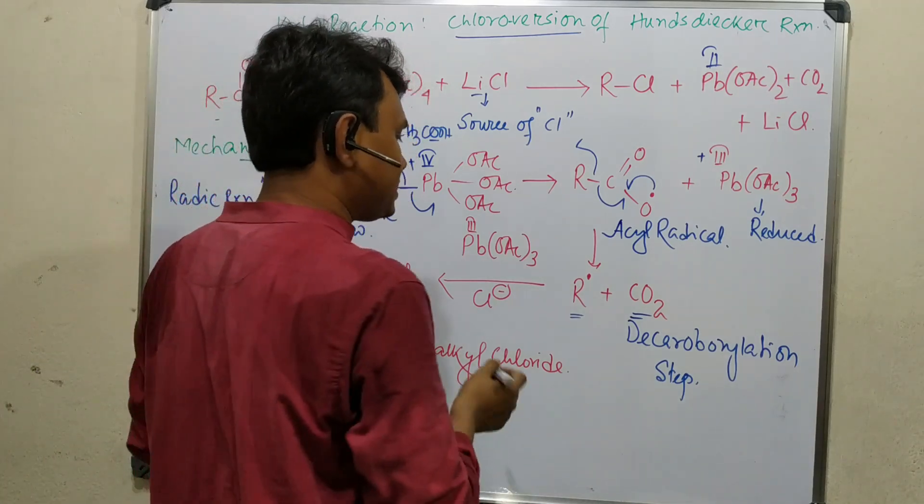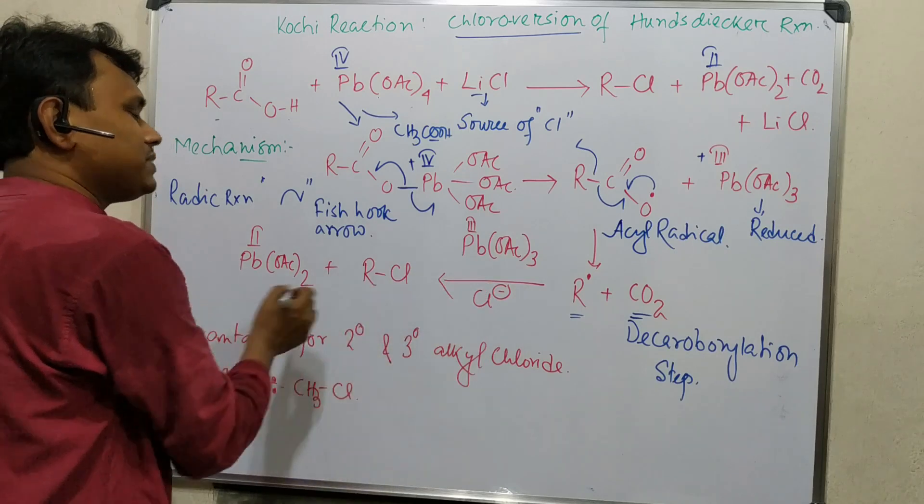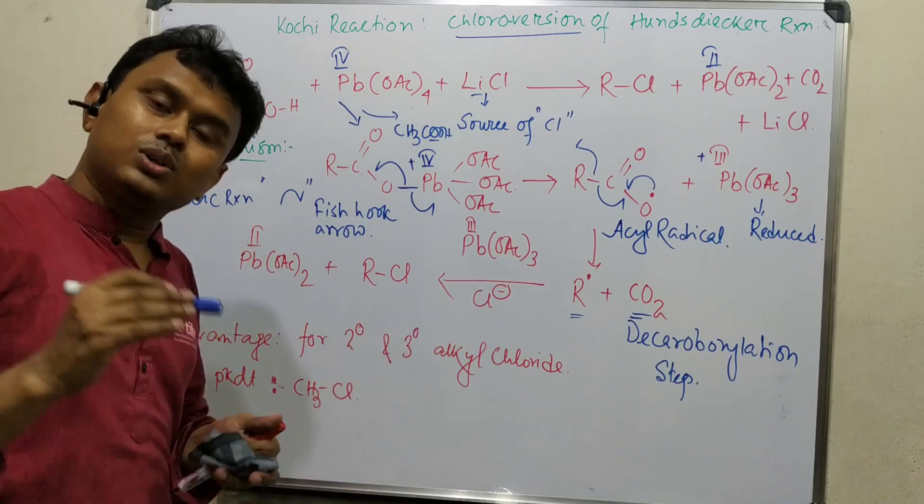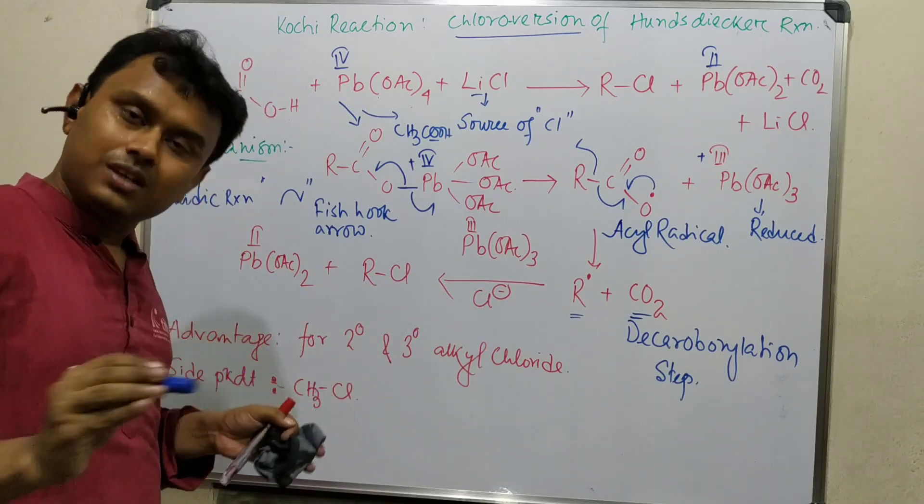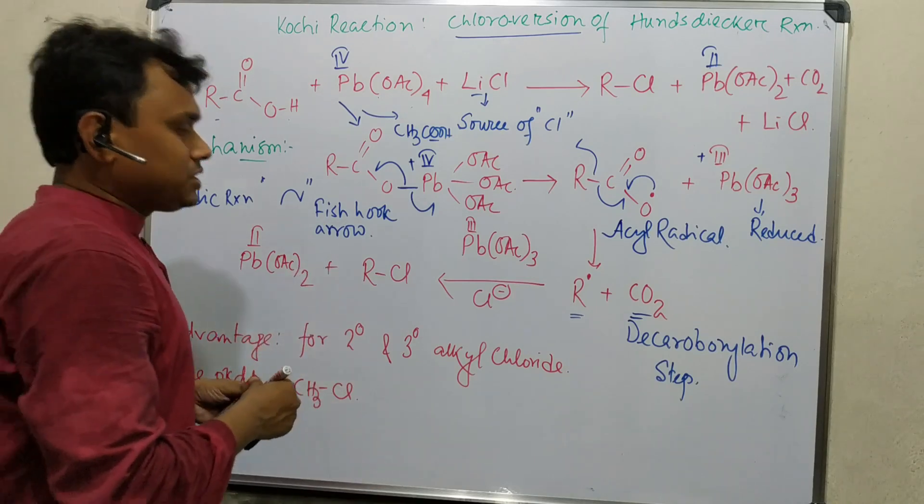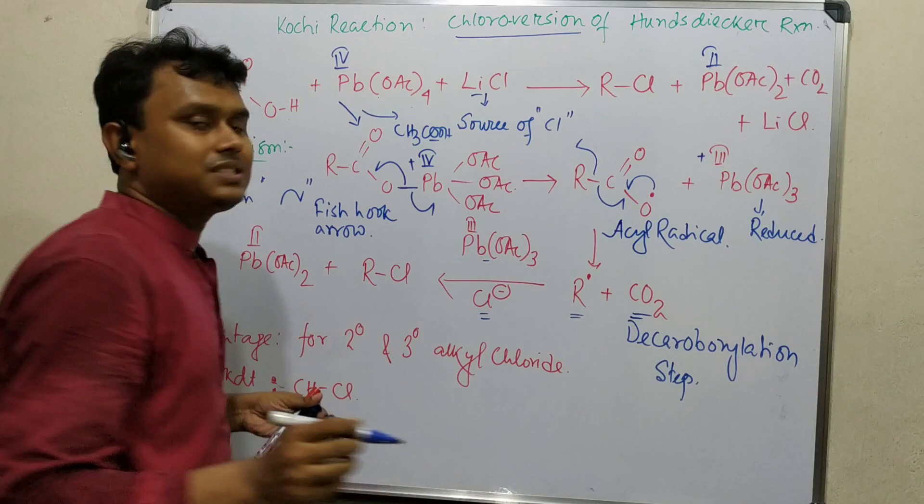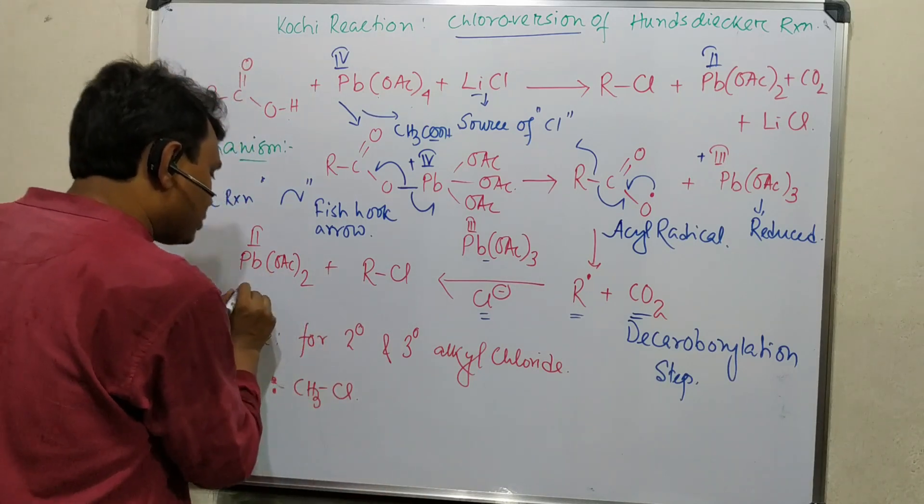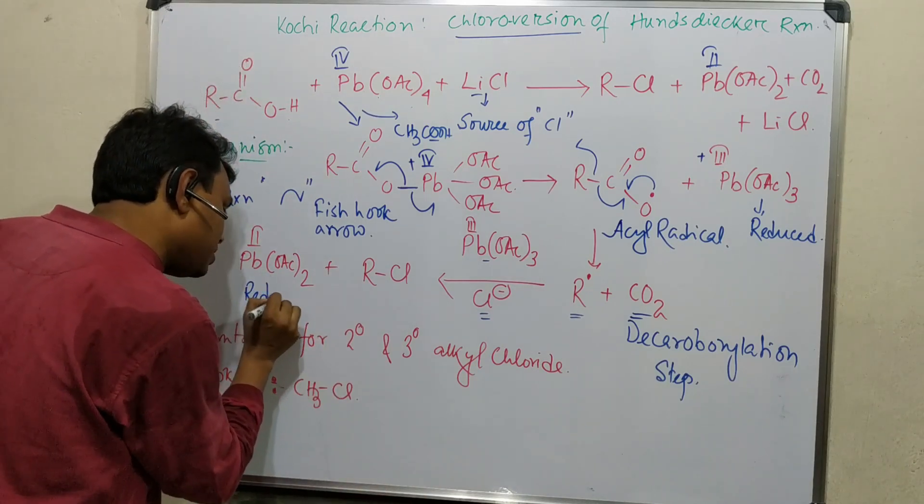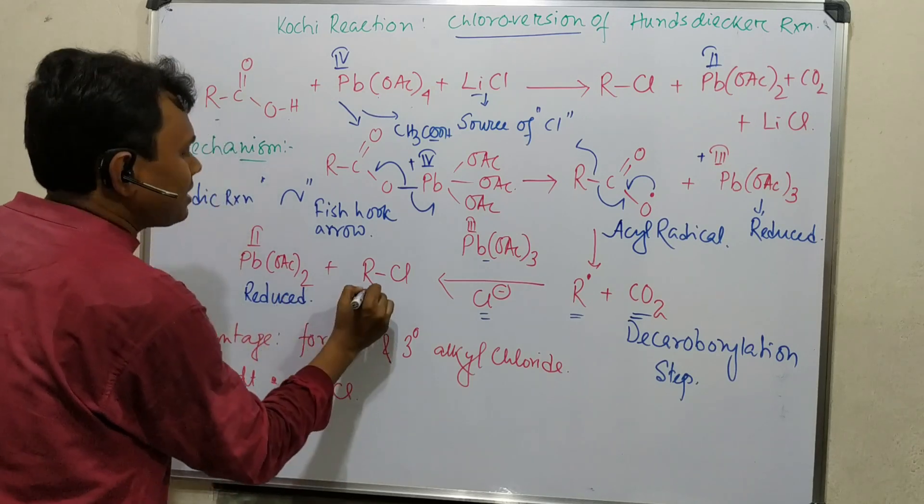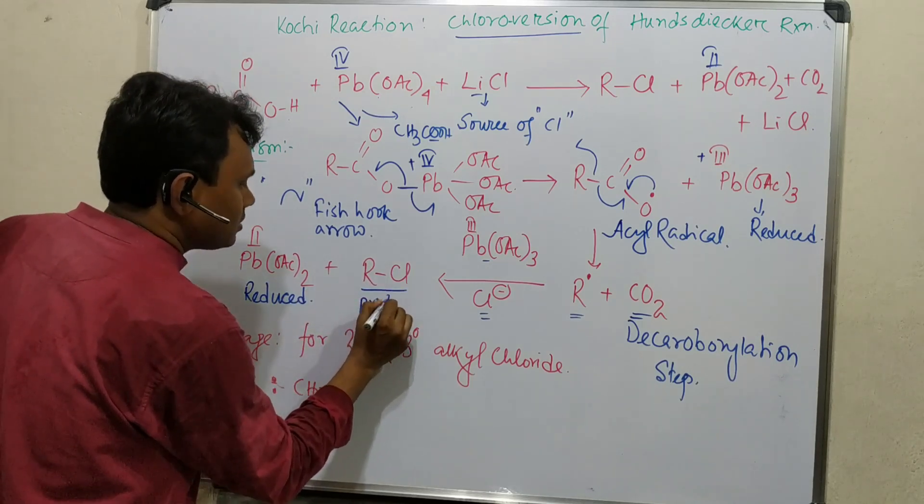Like the Hounsdiger reaction, this step is a little confusing, so just accept it as we don't have complete mechanistic support. It is believed that this radical, chloride, and lead tetraacetate react to produce lead-2, which is one unit further reduced, and RCl, our product.